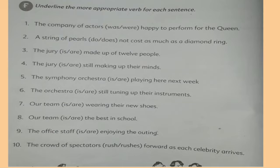We will not use plural here. We have said that when we use a single body, we use a singular verb. When we give a collective noun as a single body, the company of actors was — we have a singular verb. It was a collective noun, happy to perform for the crowd. Second: a string of pearls does not cost as much as a diamond ring. A string of pearls — singular form here — does not cost as much as a diamond ring.